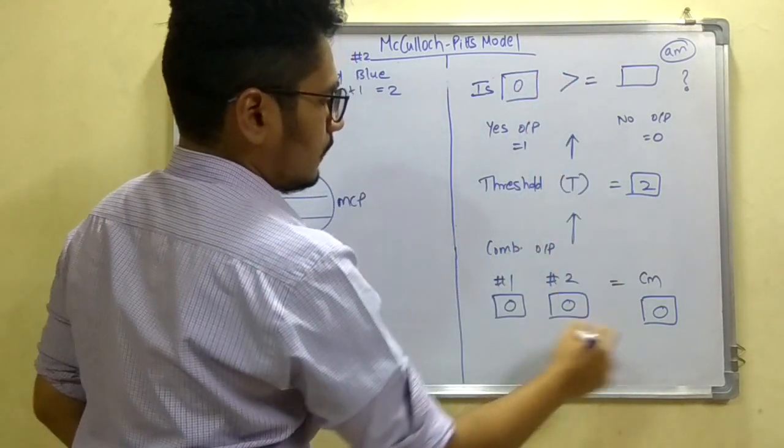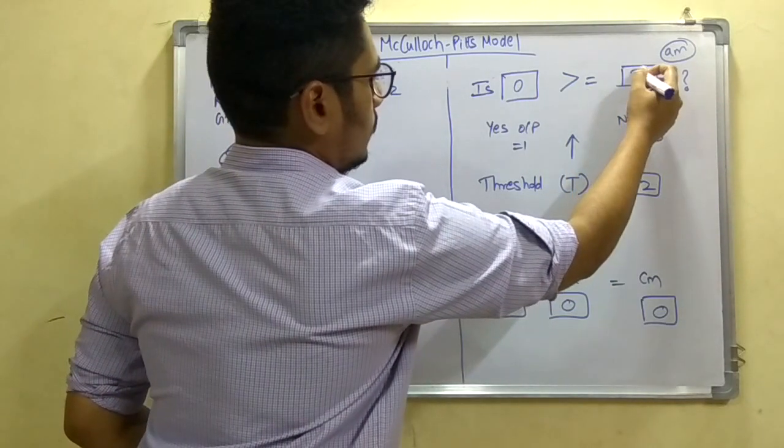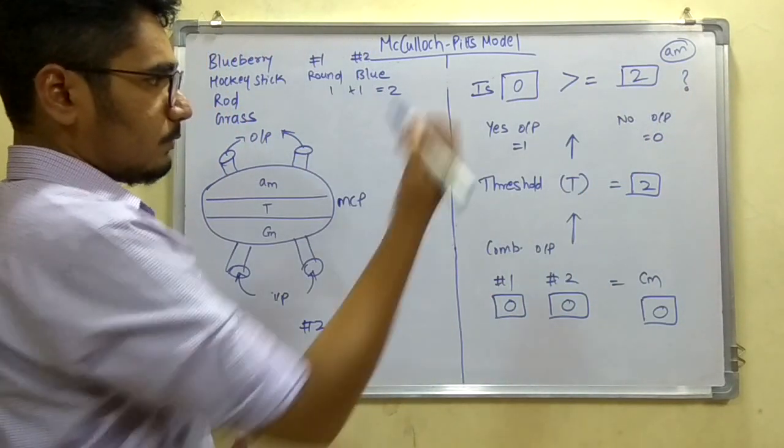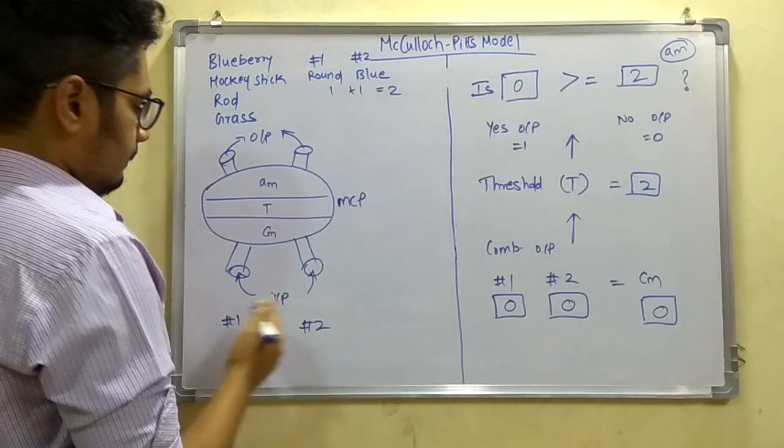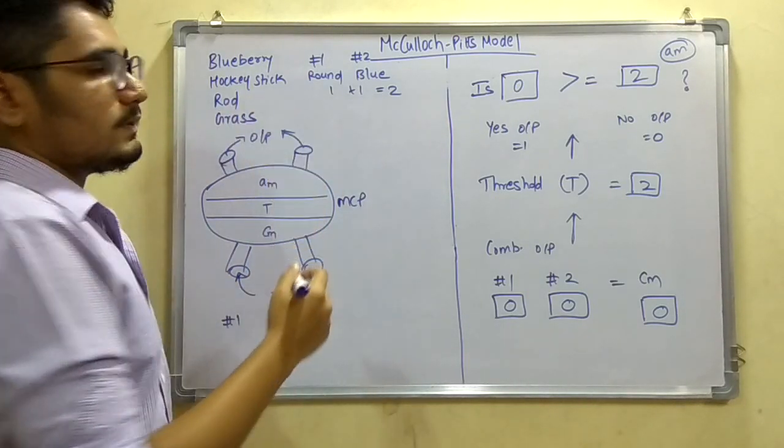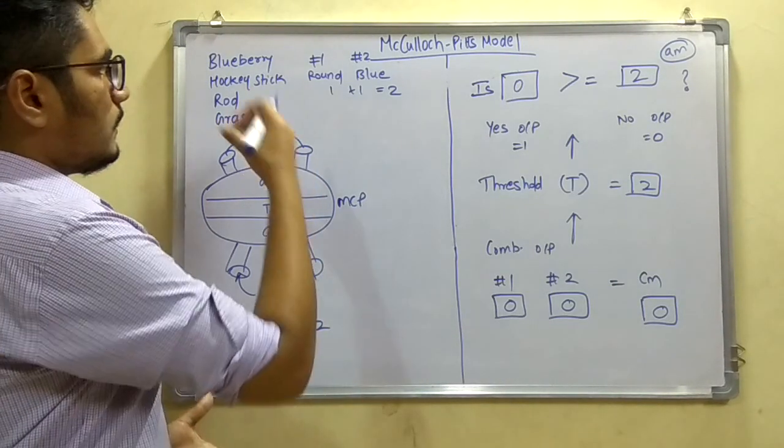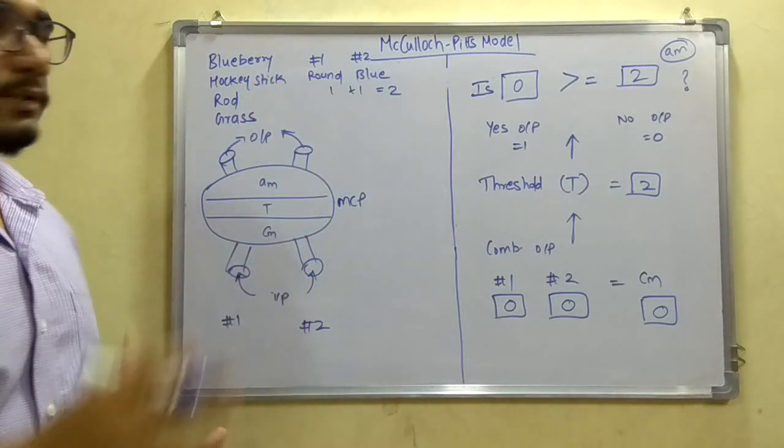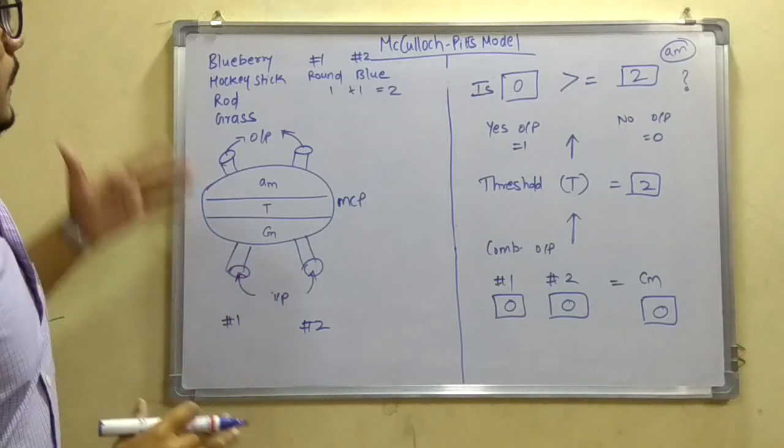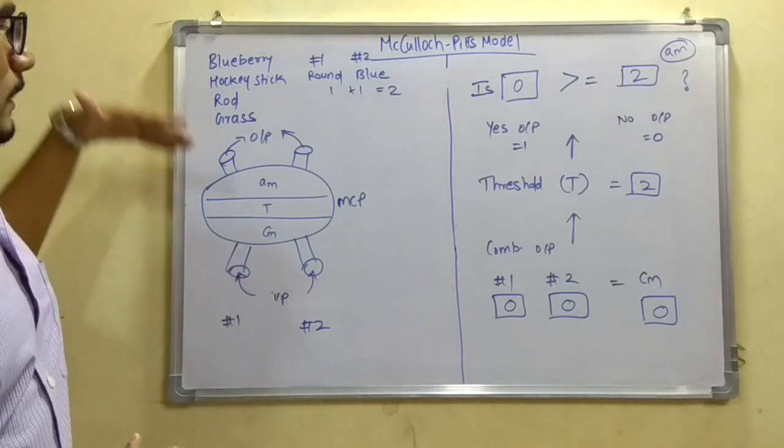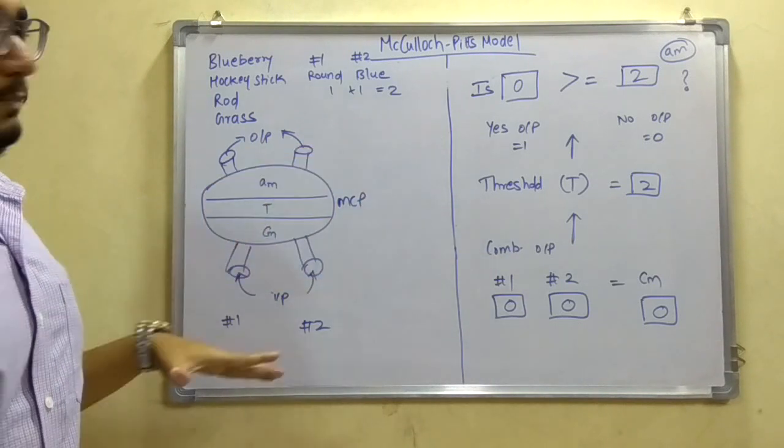And we know the combined threshold here is two. When this moves up the chain, then the output we got is zero, which is greater than or equal to two? When we question this, we will get the answer as wrong. So when we feed the inputs to this, that is the wrong decision to be taken. So that case goes false. And similarly for rod and grass, the same working takes place.